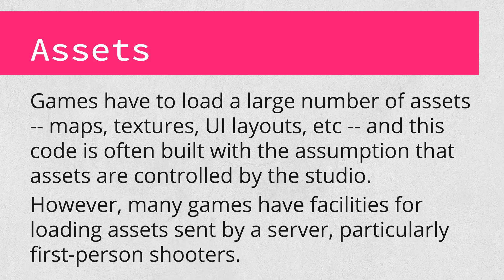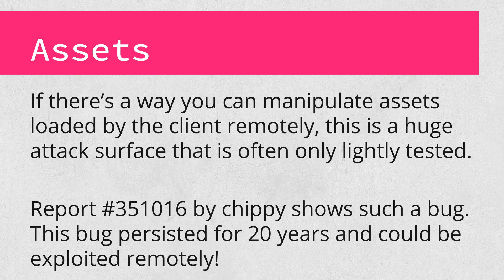One of the most complex parts of a game is loading assets — whether that's map files, textures, fonts, or otherwise. Because of the complexity and performance needs, this code is often written with the assumption that the studio will always have complete control over the data, and thus it doesn't need to be hardened against attacks. While that's generally true, there are big exceptions — most notably in first person shooters, where it's generally possible for a server to send down new map files and character models. If you can manipulate those assets remotely, that poses a huge security risk, since this loading code is almost never well tested. The hacker Chippy found such a bug in Half-Life that had existed in the public for 20 years. Even older games can contain nasty bugs in asset loading code — it's a huge attack surface.